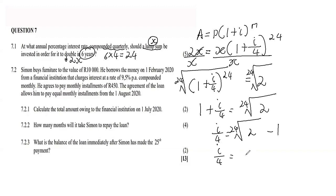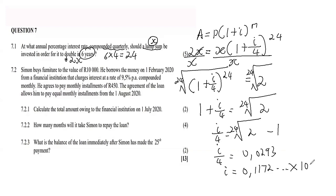Punching that into the calculator gives 0.0293. Cross-multiplying by 4 gives 0.1172 — rounding to four decimal places. Multiplying by 100 gives the percentage interest rate: 11.72% rounded to two decimal places. That's how you solve it — a five-mark giveaway.